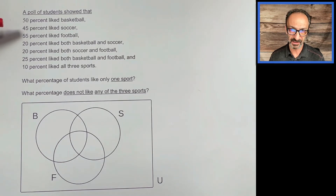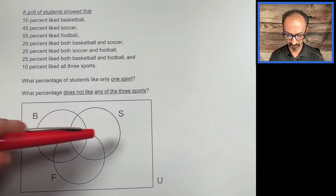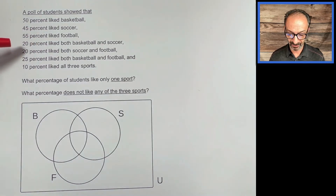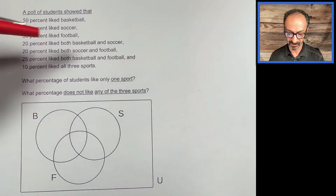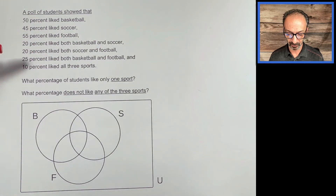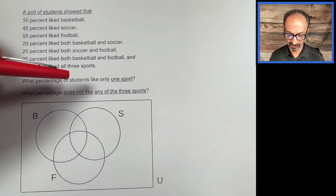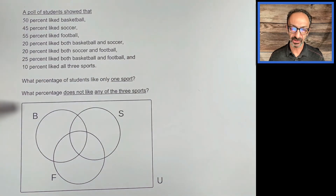A poll of students showed that 50% liked basketball, 45% liked soccer, 55% liked football. 20% liked both basketball and soccer, 20% liked both soccer and football, 25% liked both basketball and football, and 10% liked all three sports.